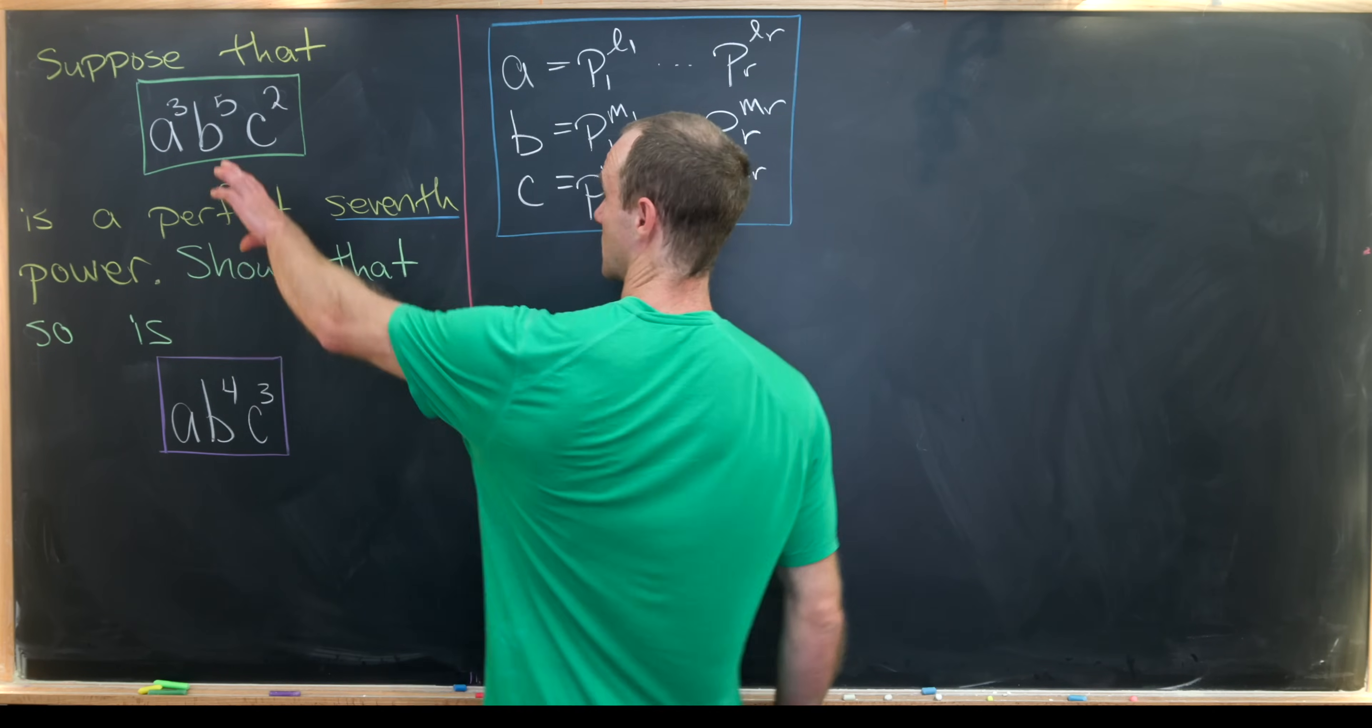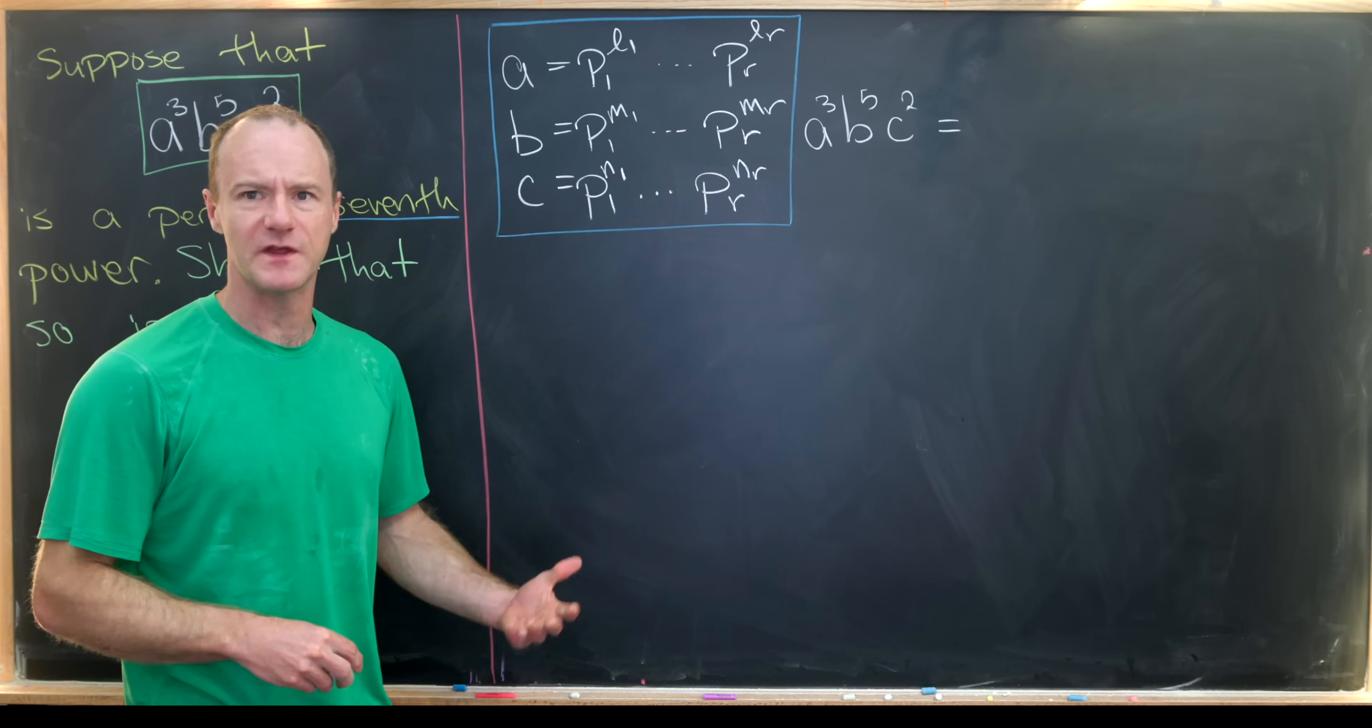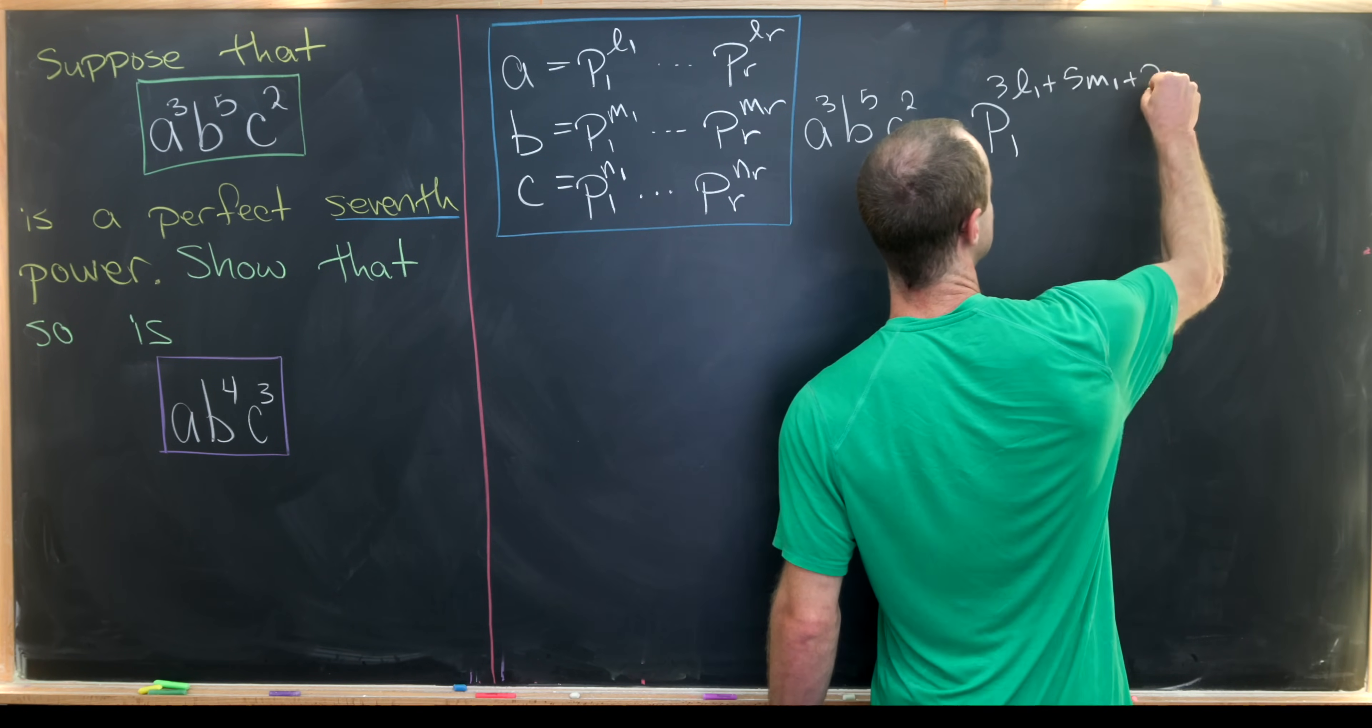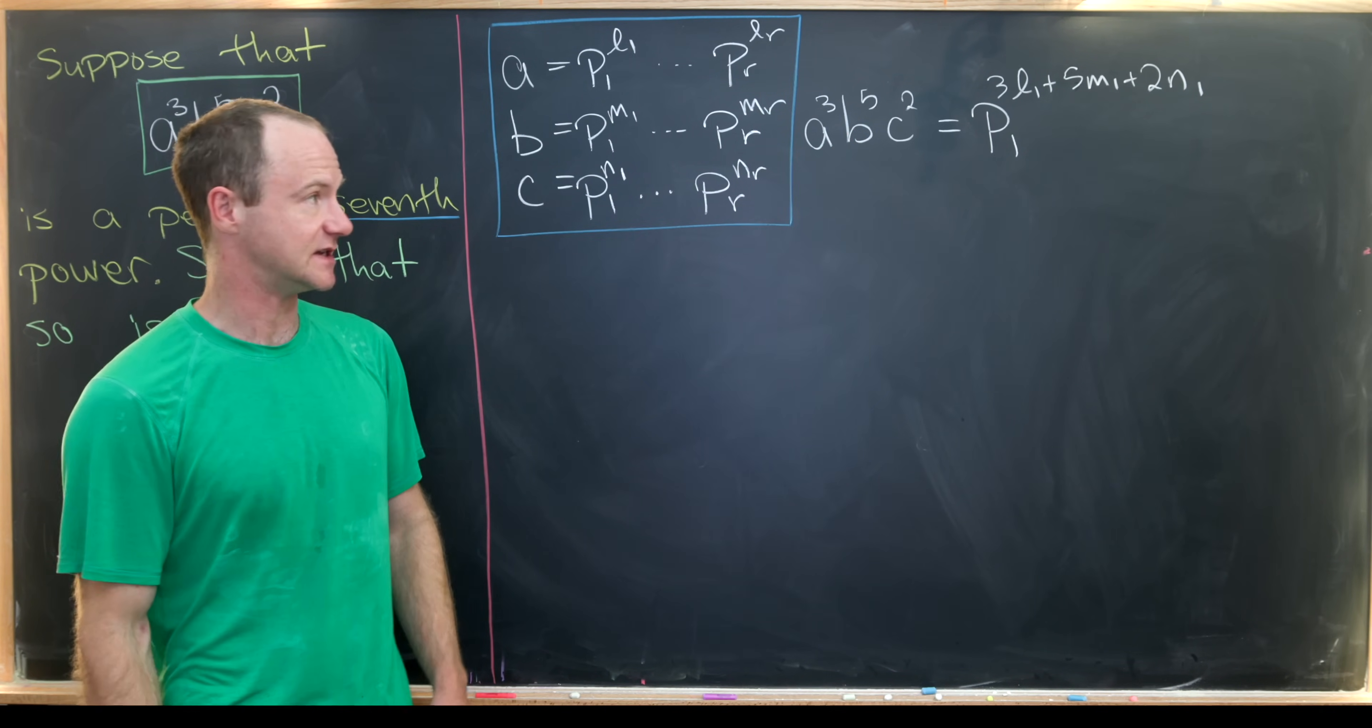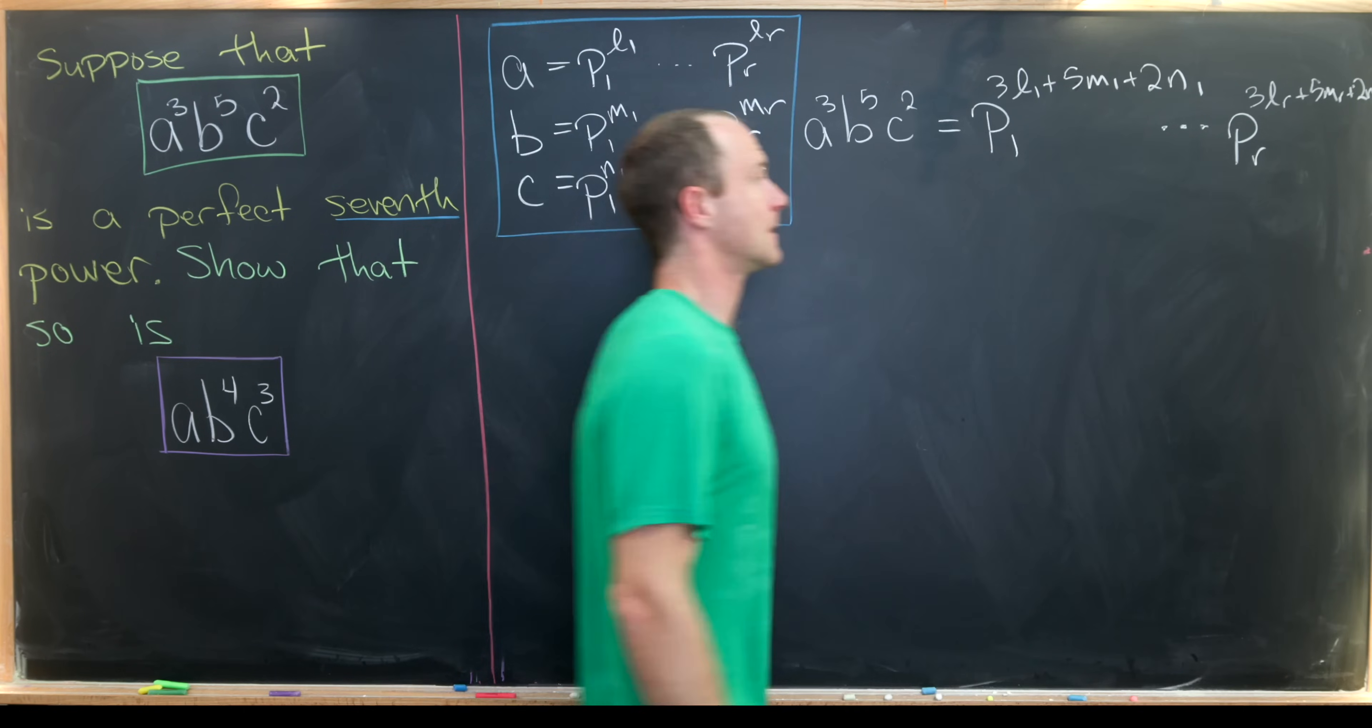Okay, so next up, we'll look at this object right here, which is a cubed times b to the fifth times c squared. And let's notice that we can rewrite that in the same prime powers or with the same primes. And so we'll have p1, but now that'll be to the power 3l1 plus 5m1 plus 2n1. And we see that because we get a power of 3 from a, a power of 5 from b, and a power of 2 from c. And then this is going to multiply all the way up to the last one, which is going to be pr, and then 3lr plus 5mr plus 2nr. Okay, good.